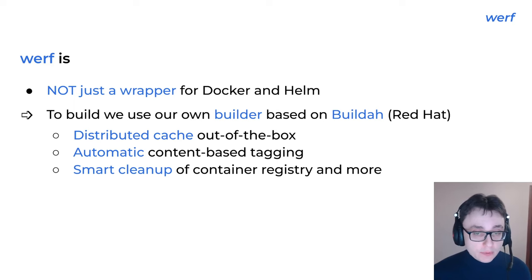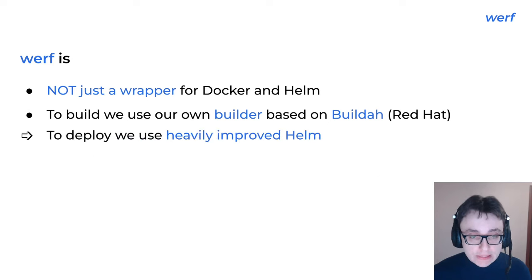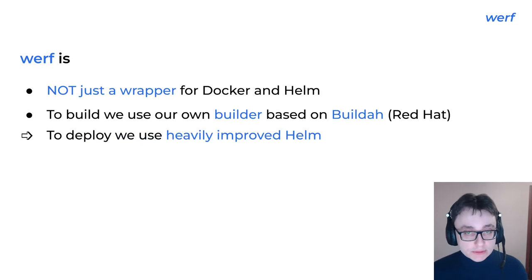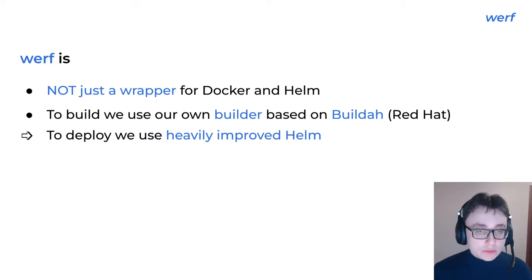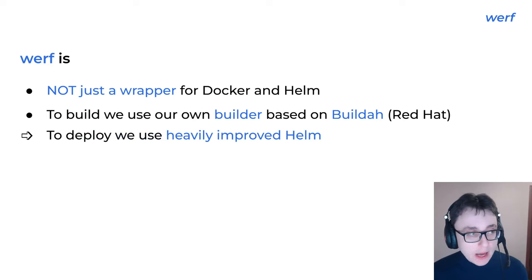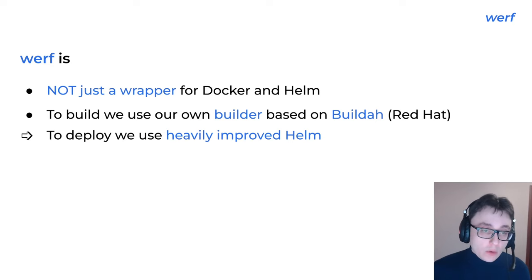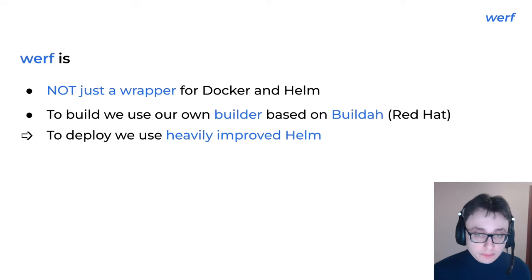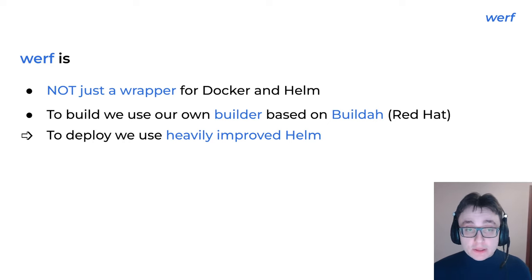Our builder has features such as distributed cache out-of-the-box, automatic content-based tagging, smart cleanup of container registry, and a handful of other features. Same with deploy — we do not use plain vanilla Helm, but a heavily improved version of Helm 3. How much it is improved and in what ways will become more clear later in the presentation.